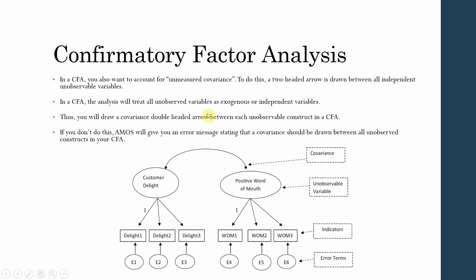In CFA, the analysis will treat all unobserved variables as exogenous or independent variables. Thus, you will draw a covariance or double-headed arrow between all your unobservable constructs.